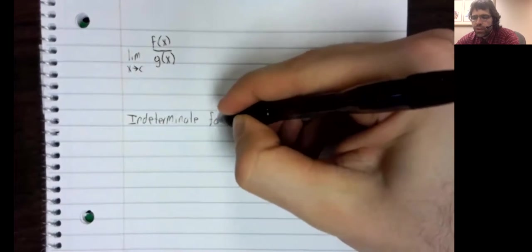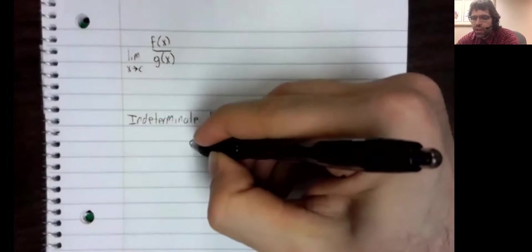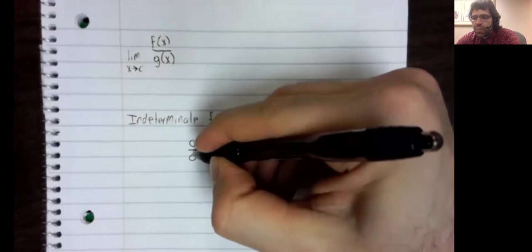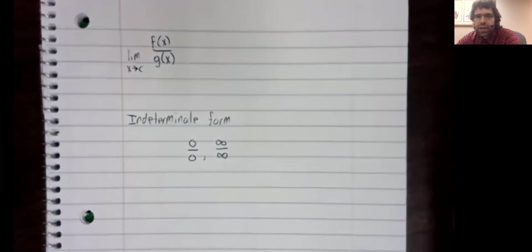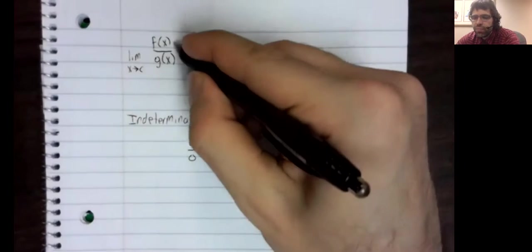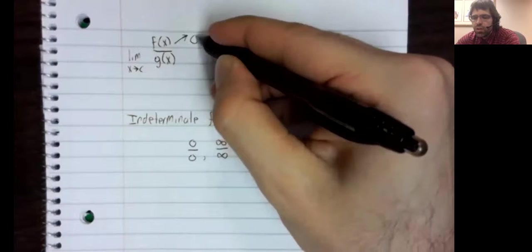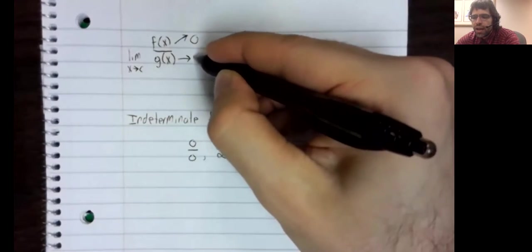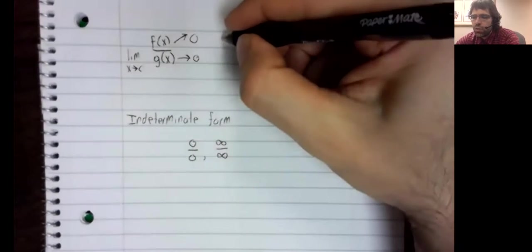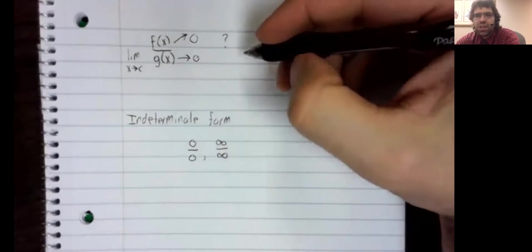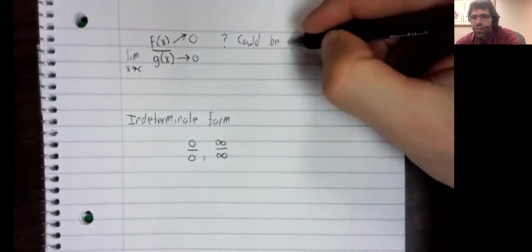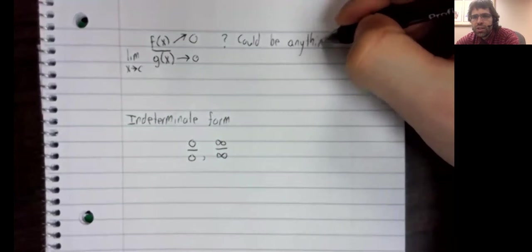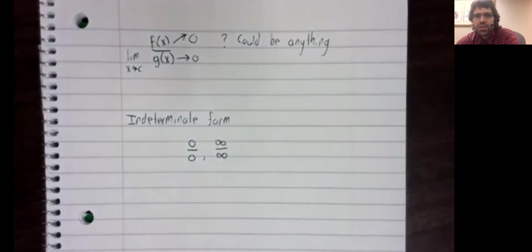We are going to introduce two indeterminate forms: zero divided by zero, and infinity divided by infinity. If both the numerator and the denominator go to zero, the limit is indeterminate. We do not have enough information to say what the limit is.